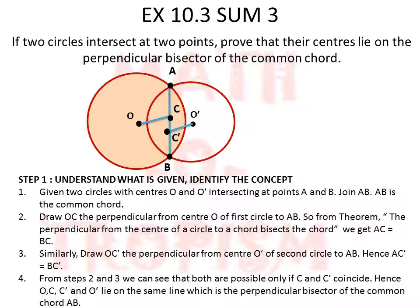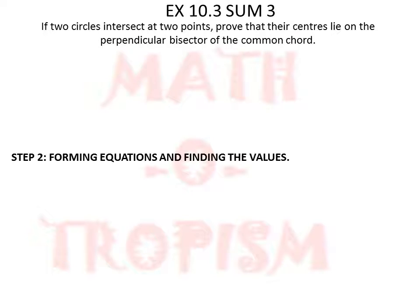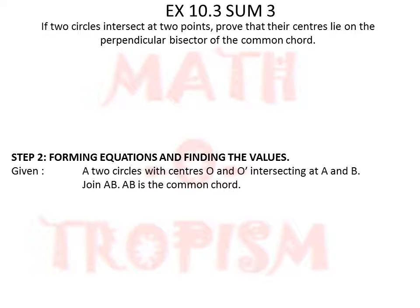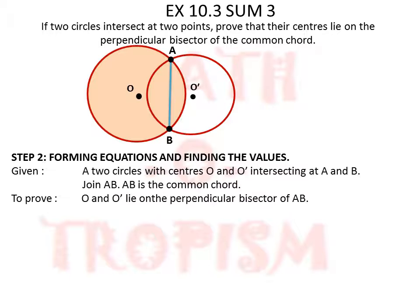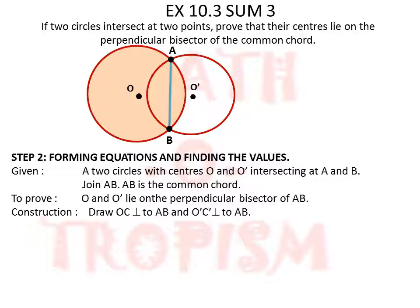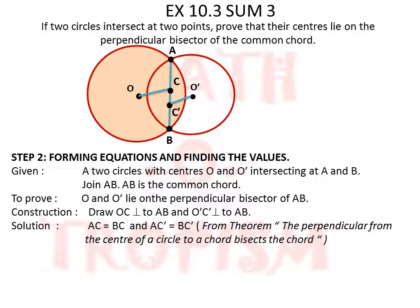Proceeding formally: given two circles with centers O and O' intersecting at A and B, we join AB, so AB is the common chord. We need to prove that O and O' lie on the perpendicular bisector of AB. By construction, we draw a perpendicular OC to AB and another perpendicular O'C' to AB. From the theorem, AC equals BC and AC equals BC for each respective circle.